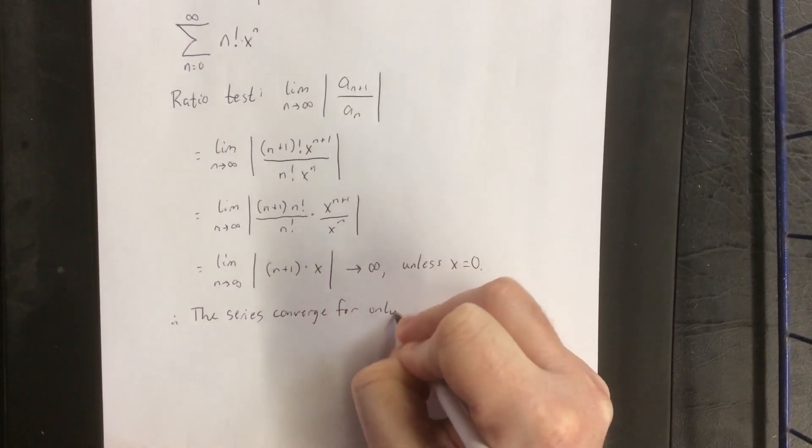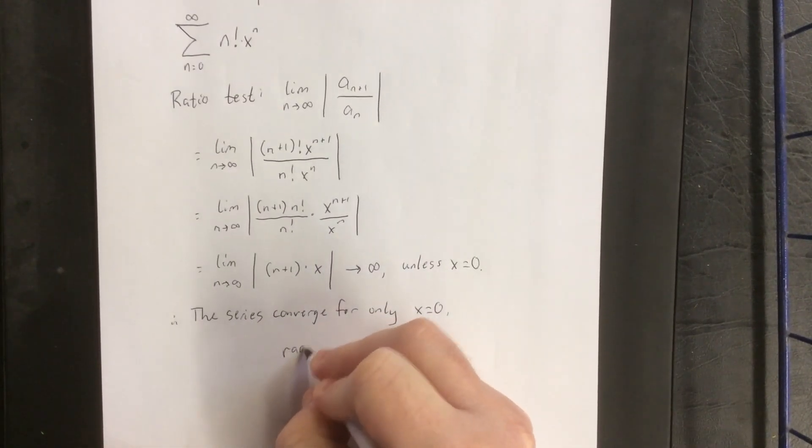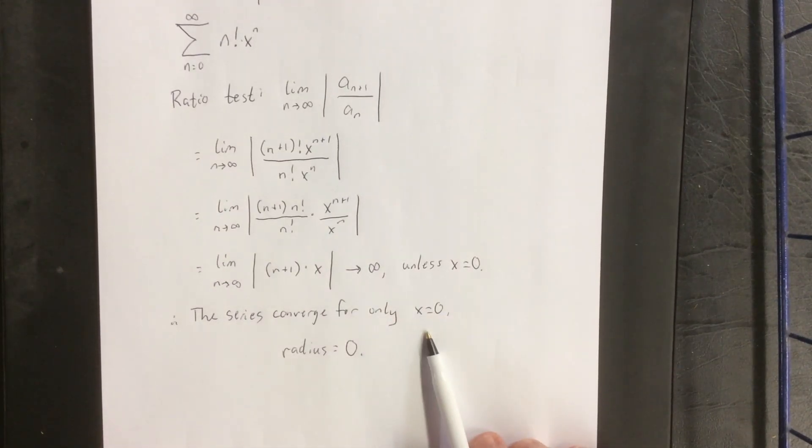For only x equals 0. Therefore, the radius of convergence is going to be equal to 0, and the interval is not actually an interval, it's only at one single point.